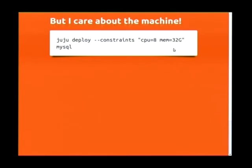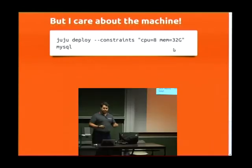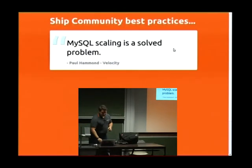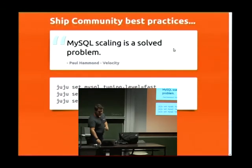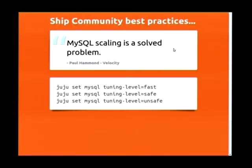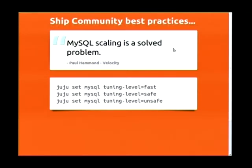Juju also allows you to do machine-level stuff. You can tell Juju this service needs to run on a minimum of 32 gigs of RAM and 8 CPU, and it'll find an equivalent machine in your provider and do that. We're shipping with best practices, which is very important for charms. Charms expose a certain level of configuration to the user — not necessarily one-to-one. You don't want to expose every single line in my.cnf for MySQL or every option in Apache.